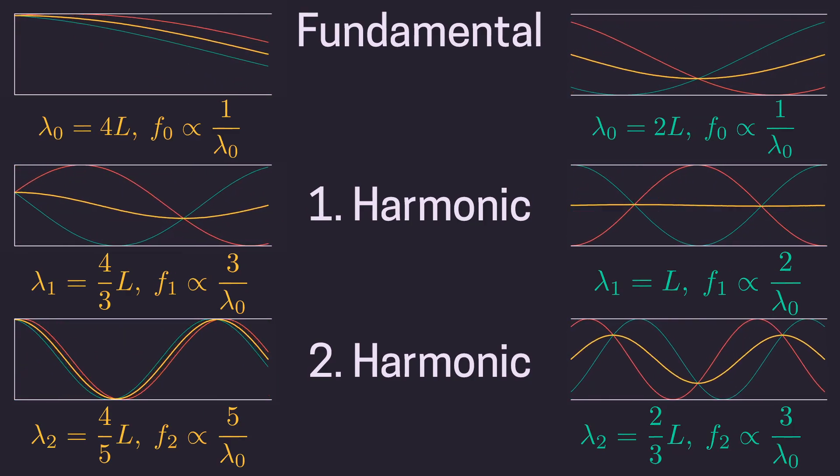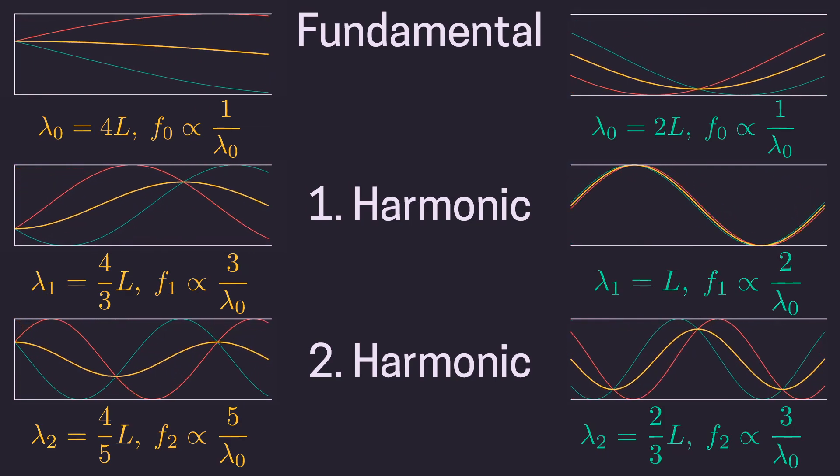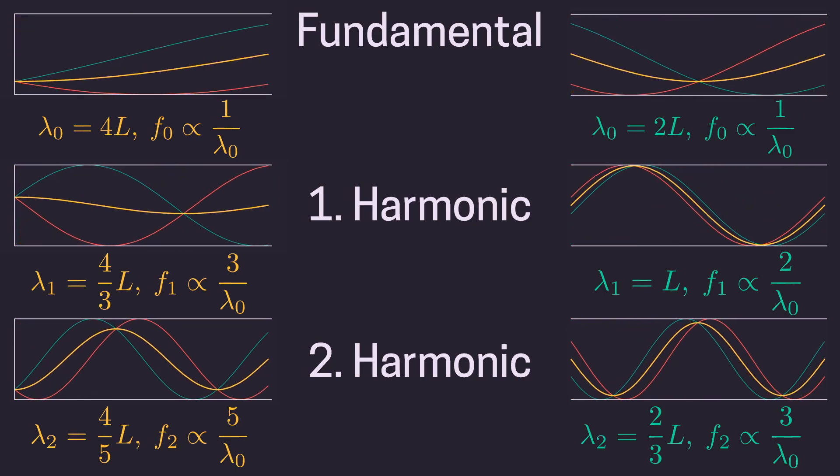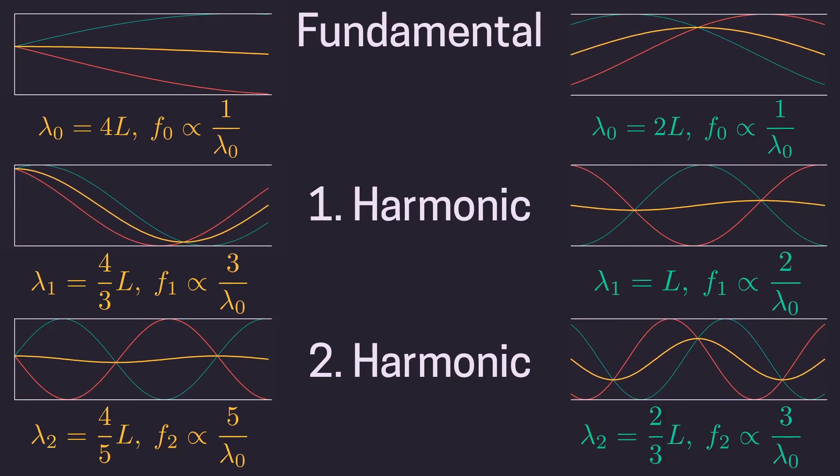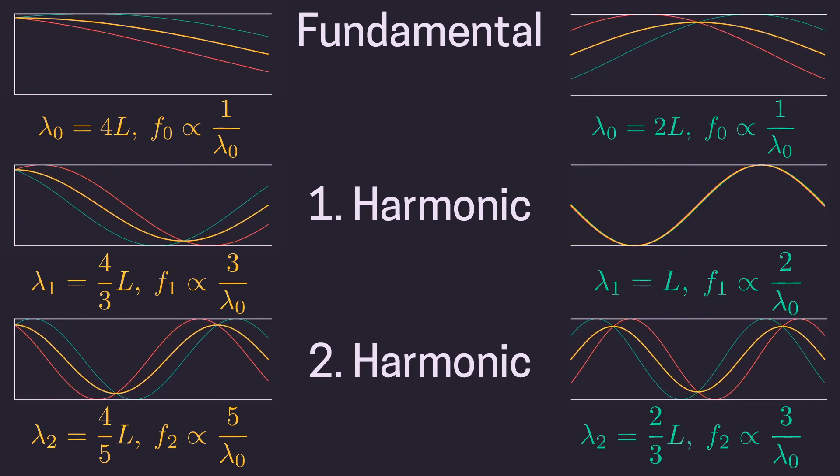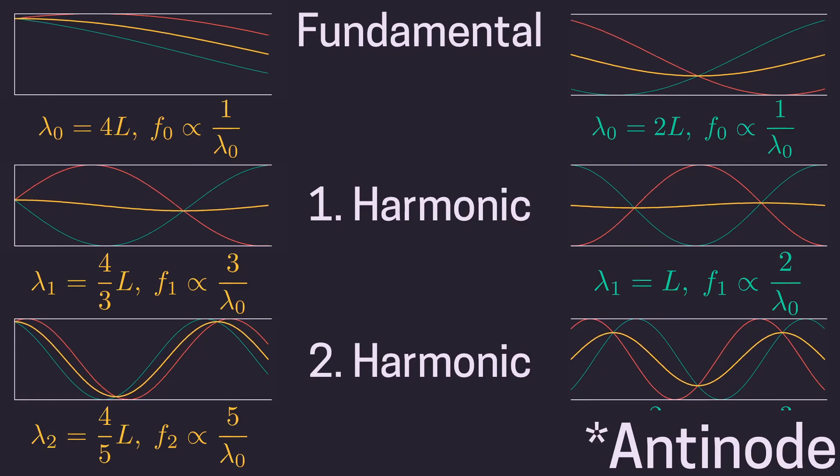This is pretty weird. We understand why the clarinet has only the odd harmonics. The mouthpiece acts like a closed end. But why does the saxophone have all the harmonics? A saxophone has the same harmonics as a flute. But the mouthpiece of a saxophone is pretty much the same as that of a clarinet. There should also be a pressure note at the mouthpiece.